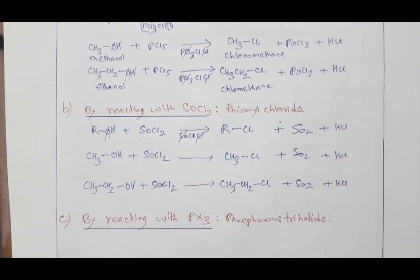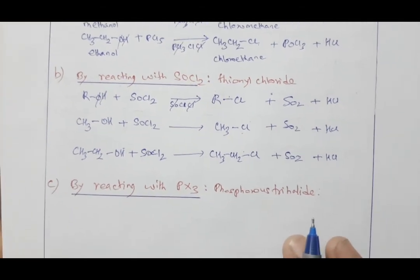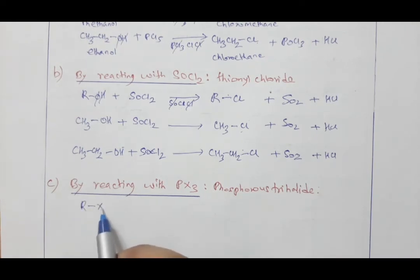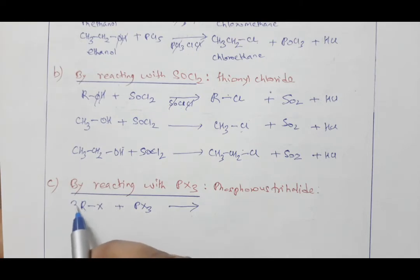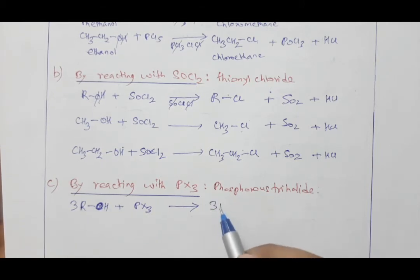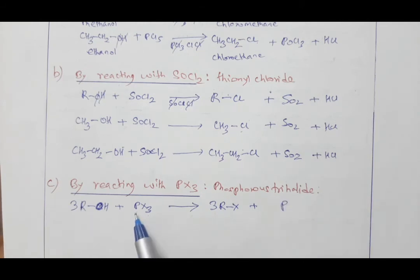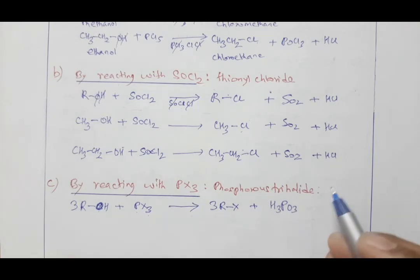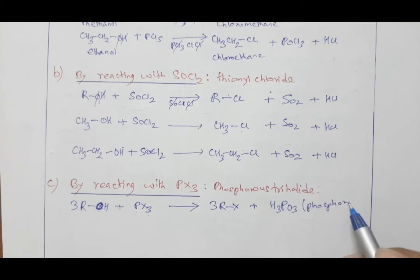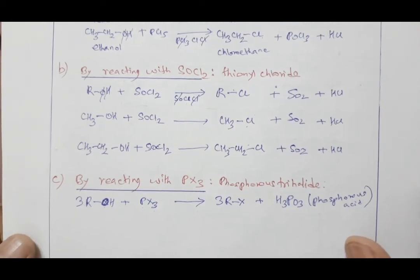Method C uses phosphorus trihalide, PX3. When you react with phosphorus trihalide you must take three molecules of alcohol. The 3R groups combine with 3X to form 3RX (alkyl halide). Phosphorus is left over along with 3H and 3O, which combine to form H3PO3 — phosphorous acid — as the byproduct.